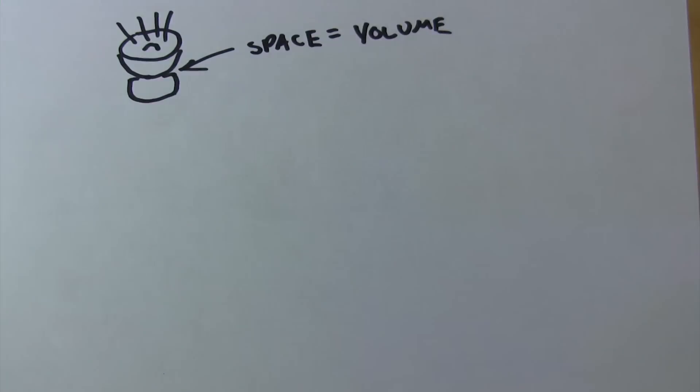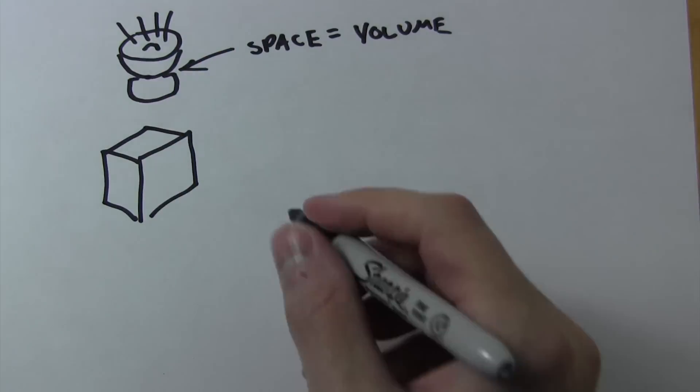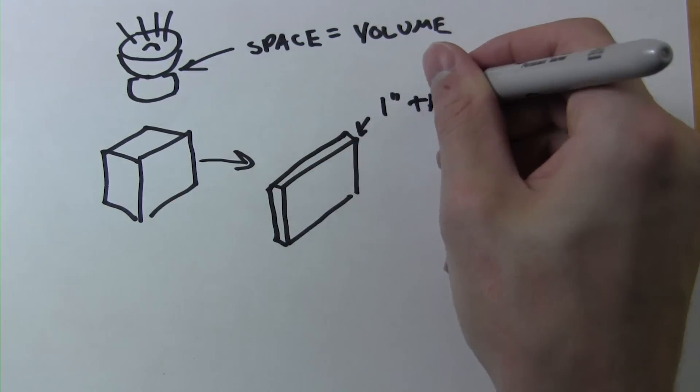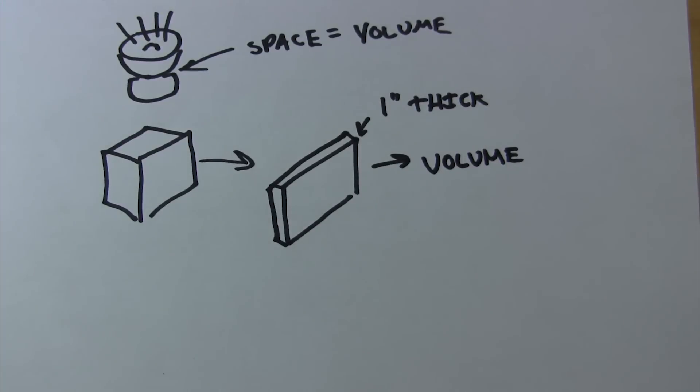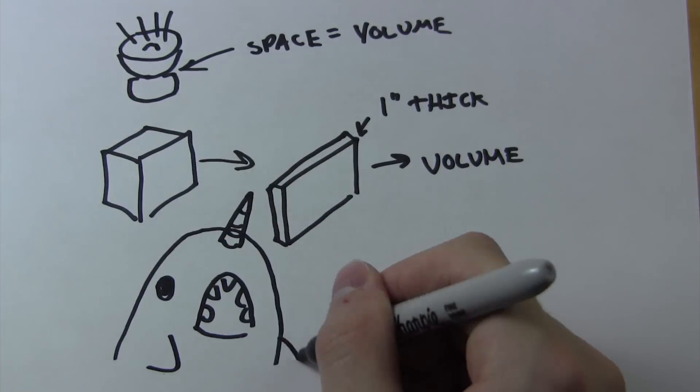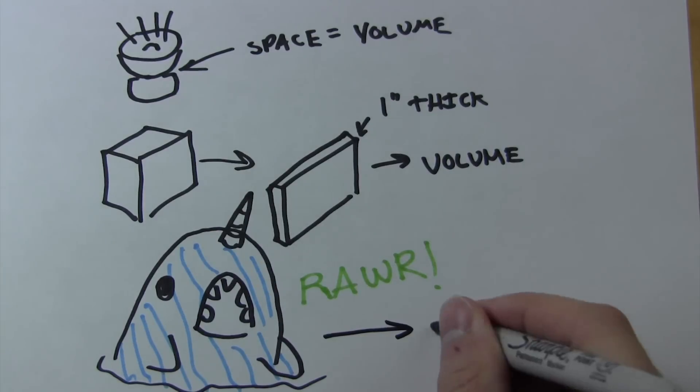What about the fact that our subwoofer takes up space and has a volume? And what about all the wood and bracing inside that also has a volume? What if there's even a narwhal in our box? That takes up volume too. How can we calculate that?